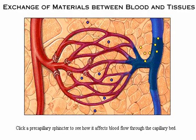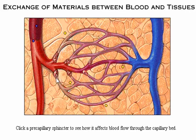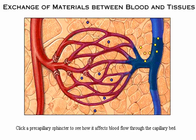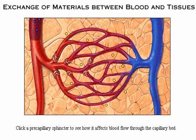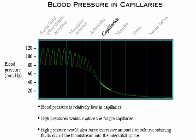Click on a pre-capillary sphincter to see how it affects blood flow through the capillary bed. In the graph of blood pressures, note that blood pressure is fairly low in the capillaries — high pressures would rupture the fragile capillaries and force solute-containing fluids out of the bloodstream into the interstitial space.